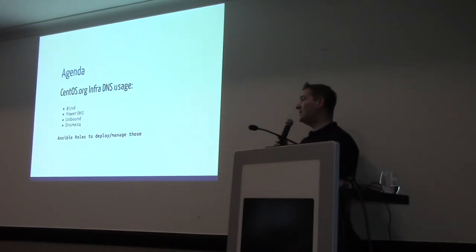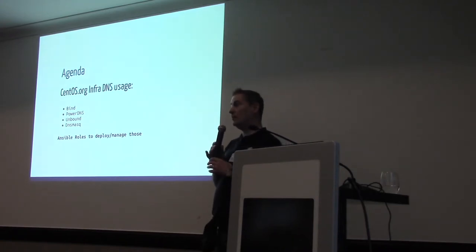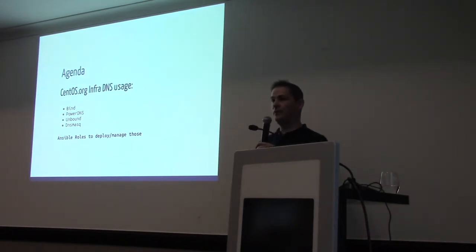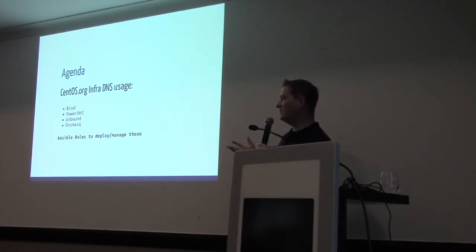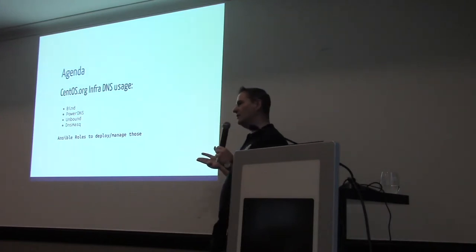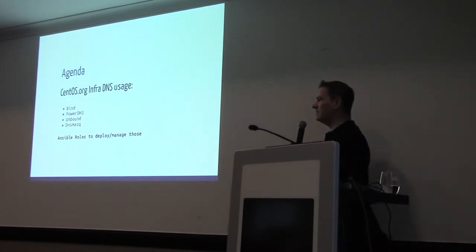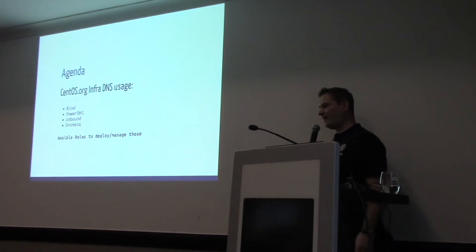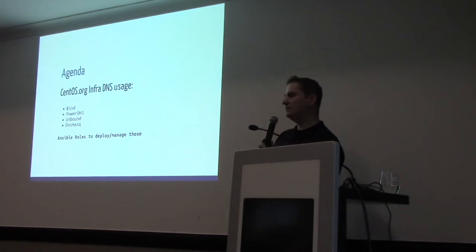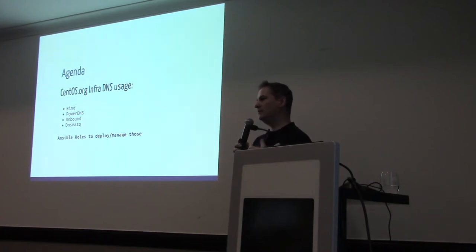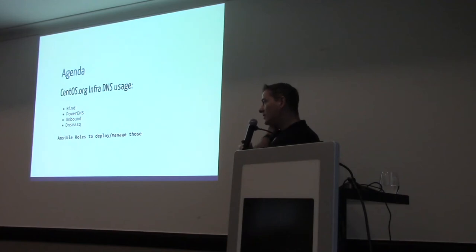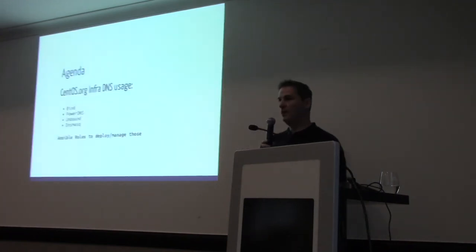We'll cover DNS usage, and this is what we use so far in the CentOS.org infra. We use Bind, we use PowerDNS, we use Unbound, and DNSmasq is still listed but we don't use it a lot. Let's discuss the rationale of why we use all those flavors, and how we maintain those DNS implementations through Ansible exclusively.